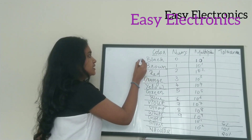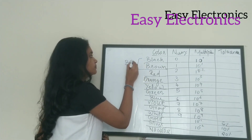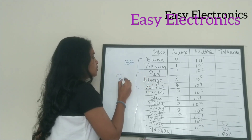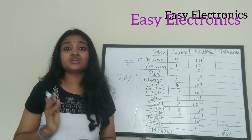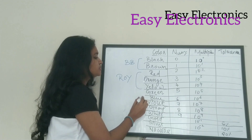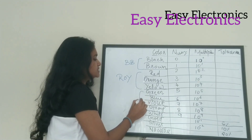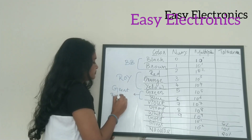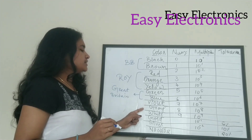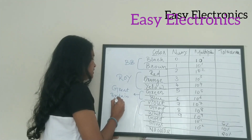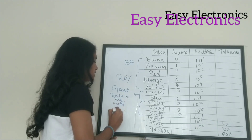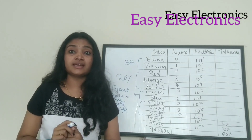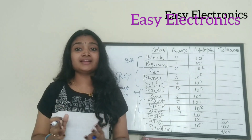First is black, then brown — BB. Then red, orange, and yellow combine to form Roy. Green and blue give us Great Britain. Violet, grey, and white give us 'very good wife.' So we learn the colors through the sentence: BB Roy of Great Britain has a very good wife.